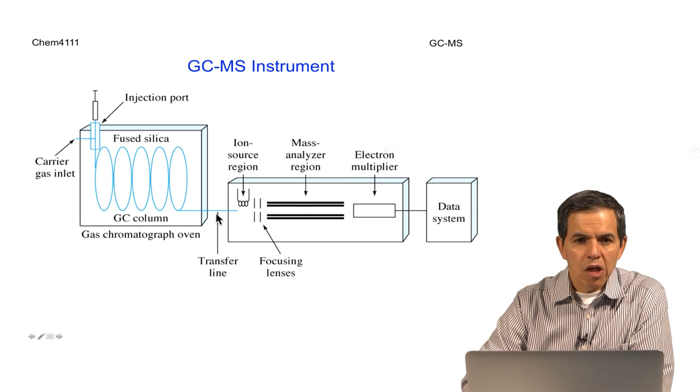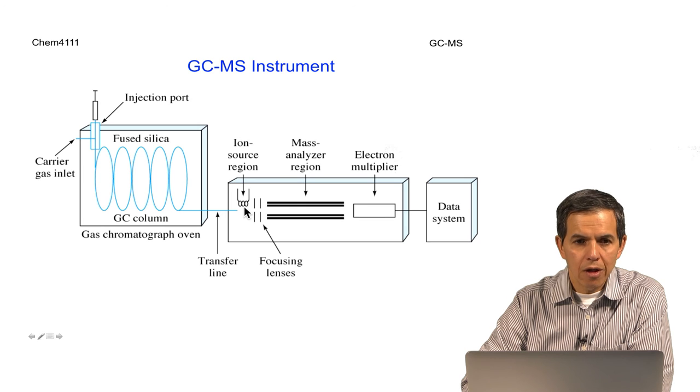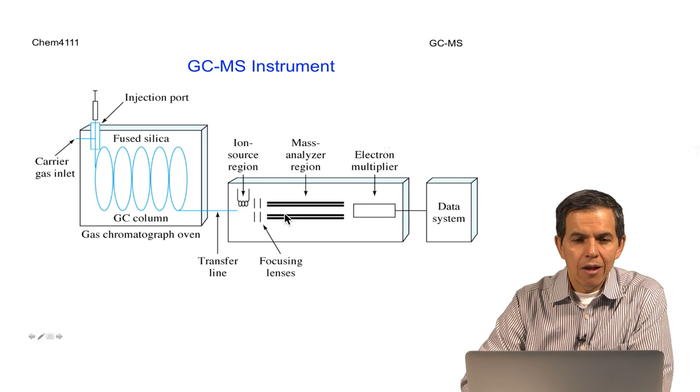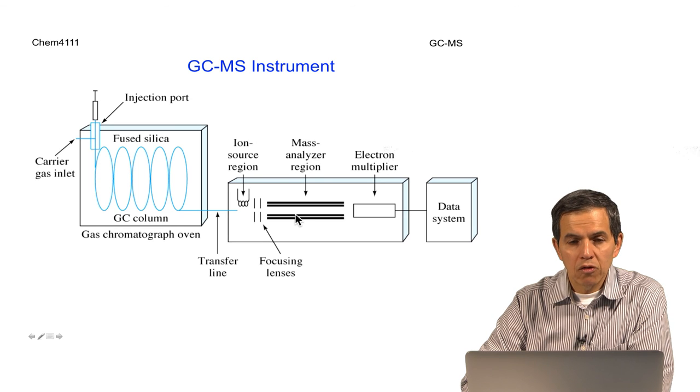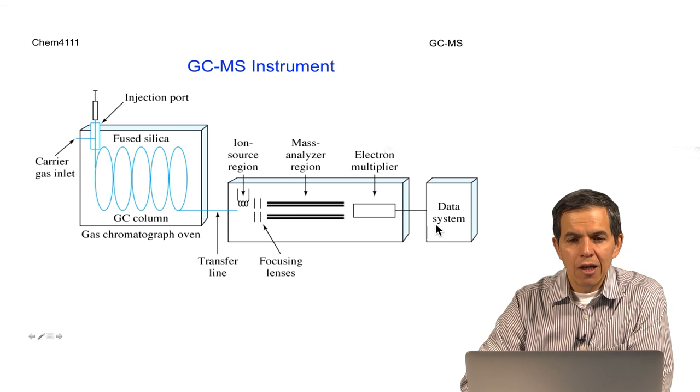Finally, there is going to be a transfer line to an ion source where electron ionization will produce ions and fragments, a mass analyzer or quadrupole that will separate the ions based on their mass-to-charge ratio, and finally a data system will provide the spectrum of interest.